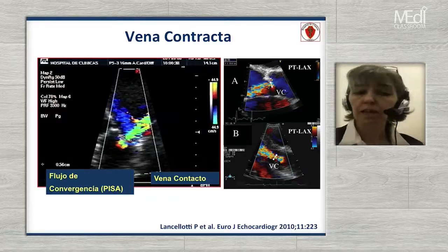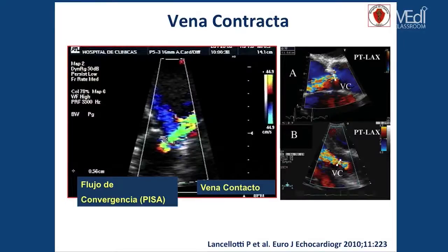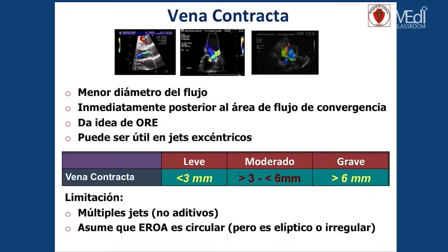Vemos cómo es la evaluación del flujo color de regurgitación y podemos ver varios componentes: el flujo de convergencia, un cuello corto y angosto que es la vena contracta, y luego el flujo de regurgitación hacia el ventrículo izquierdo. Cuando hablamos estrictamente de la vena contracta, es el menor diámetro del flujo inmediatamente posterior al área del flujo de convergencia y nos da una idea del orificio regurgitante efectivo. Puede ser útil cuando estamos en presencia de jets excéntricos. La gravedad se establece cuando tenemos una vena contracta mayor de 6 milímetros.